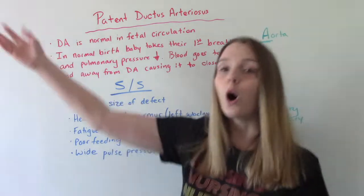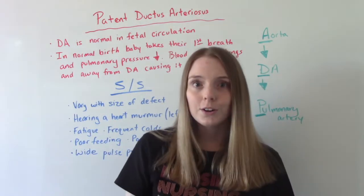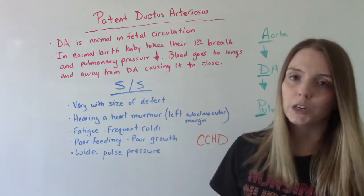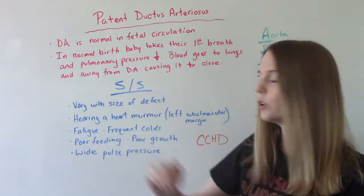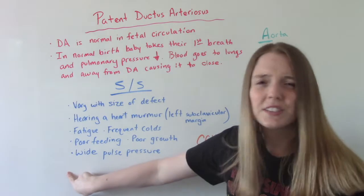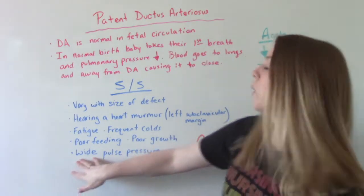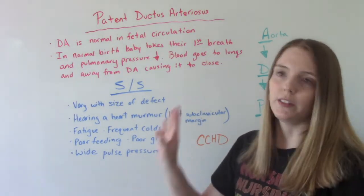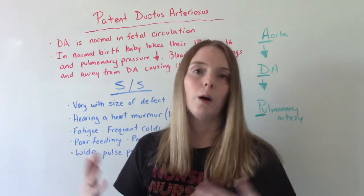Let's say they go home — you didn't hear a murmur, they weren't feeding poorly. What are you going to notice during checkups? Baby's not eating well, baby gets frequent colds, they're not growing or going up on the growth scale — staying below that 10th percentile. And if they do blood pressures on an infant, they would note a widened pulse pressure. These are things you'd see when it didn't get detected at the hospital but is picked up later at the clinic during well-baby checks.